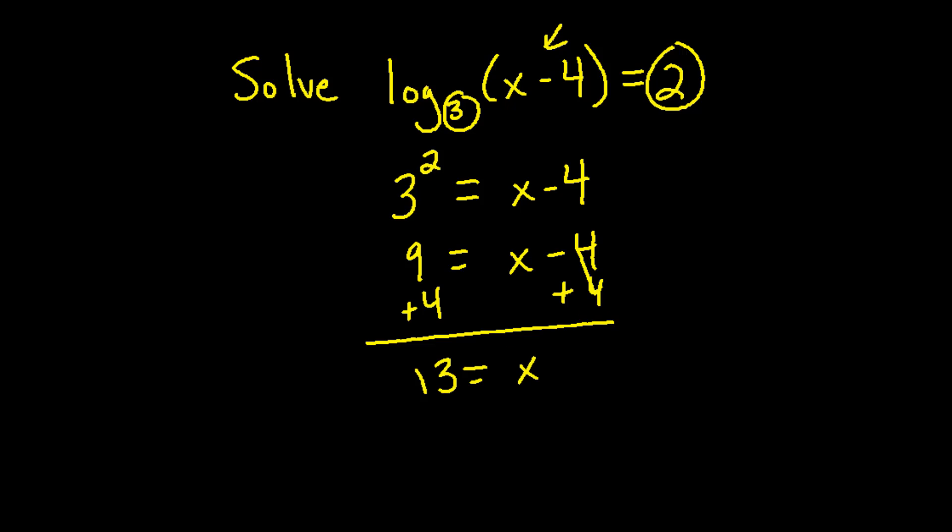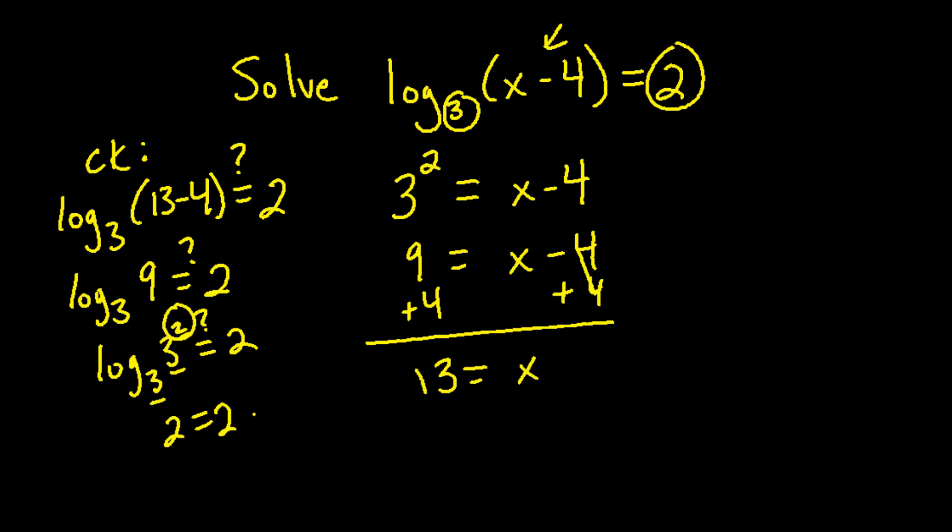We can always check this to see if it works. Log base 3 of 13 minus 4 we're checking to see if that equals 2. 13 minus 4 is of course 9 and 9 could be written as 3 squared which is one way to see that these are equivalent. Log means what is the exponent on base 3 of 3 squared and that exponent is 2. Since 2 equals 2 this answer checks.